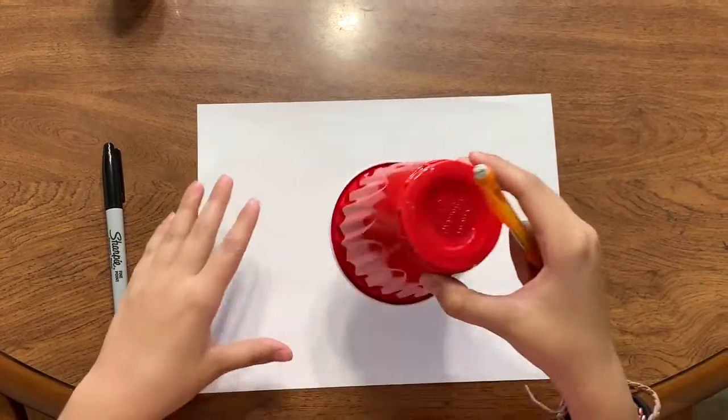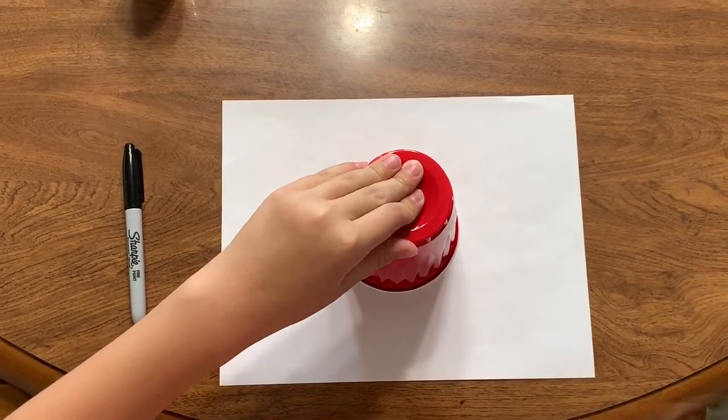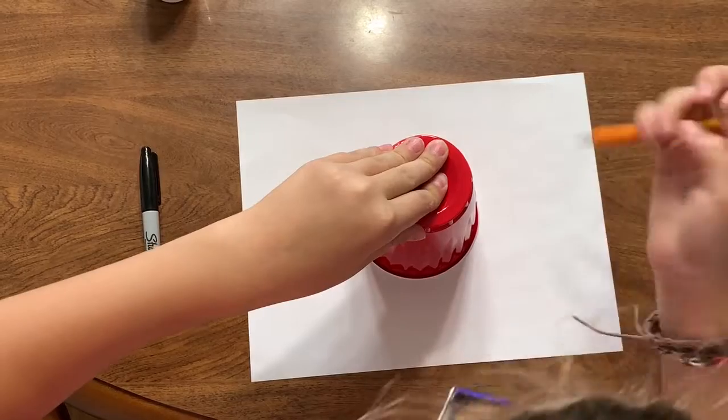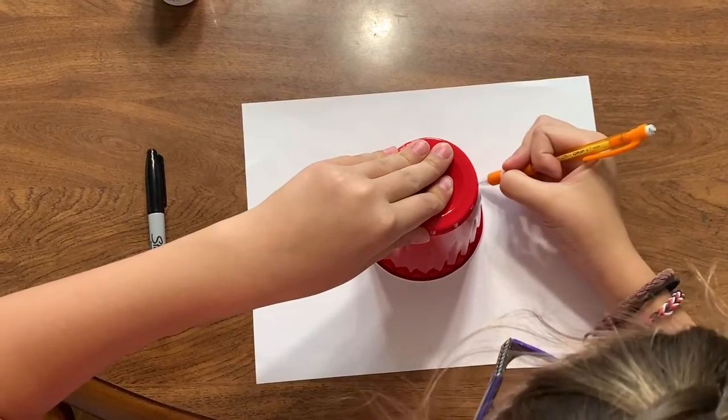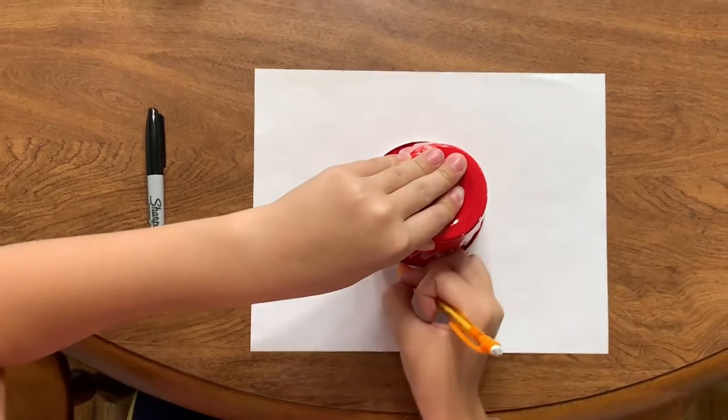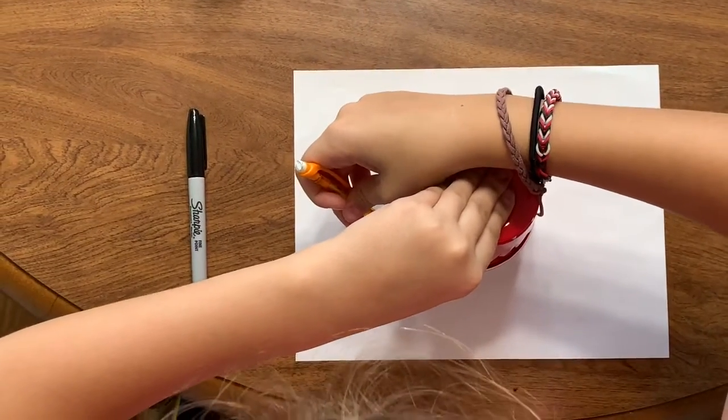I'm going to use my pencil first and I'm just going to use this cup so I can get my circles good. I'm going to put it on my paper upside down and just neatly draw around it. It doesn't have to be perfect, just do your best.